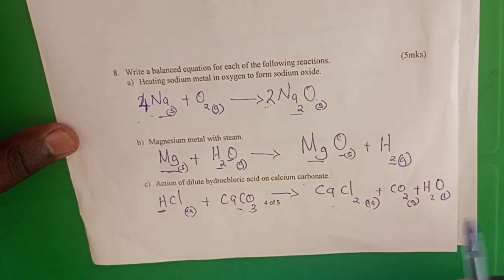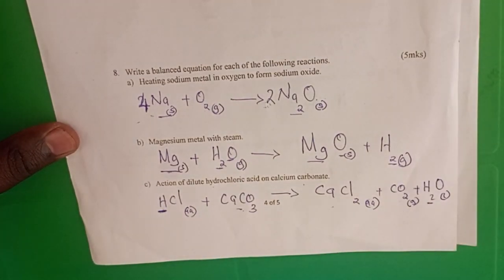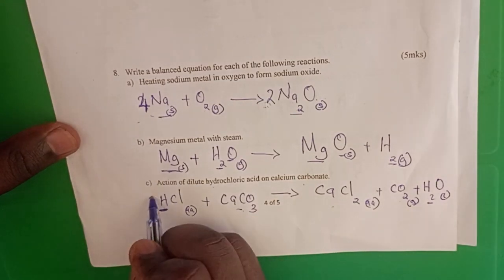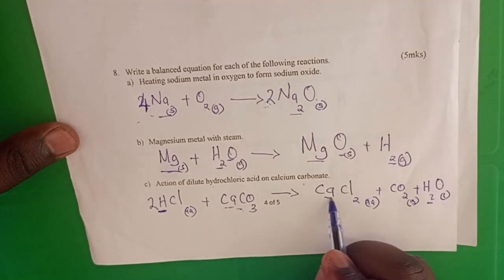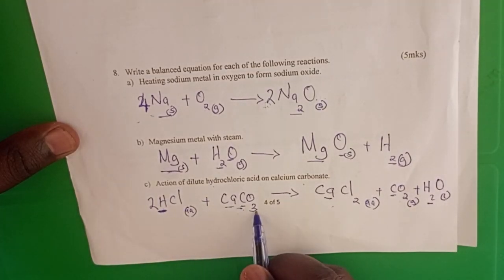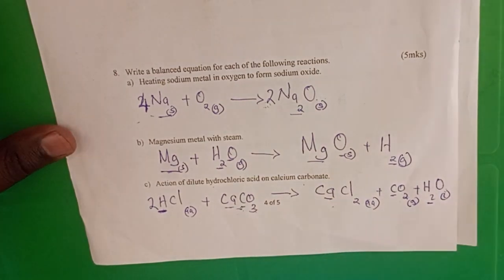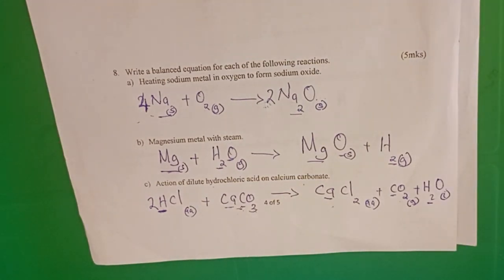Balancing: two hydrogen on the left, two hydrogen on the right — balance by putting a two in front of HCl. One calcium each side, one carbon each side, and three oxygens on each side — three oxygens. So that equation is balanced.